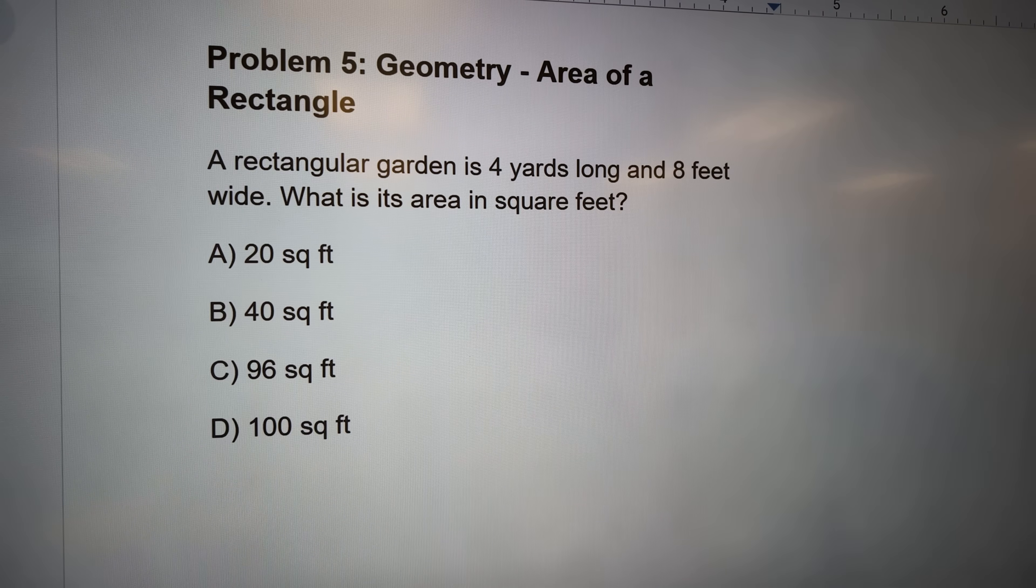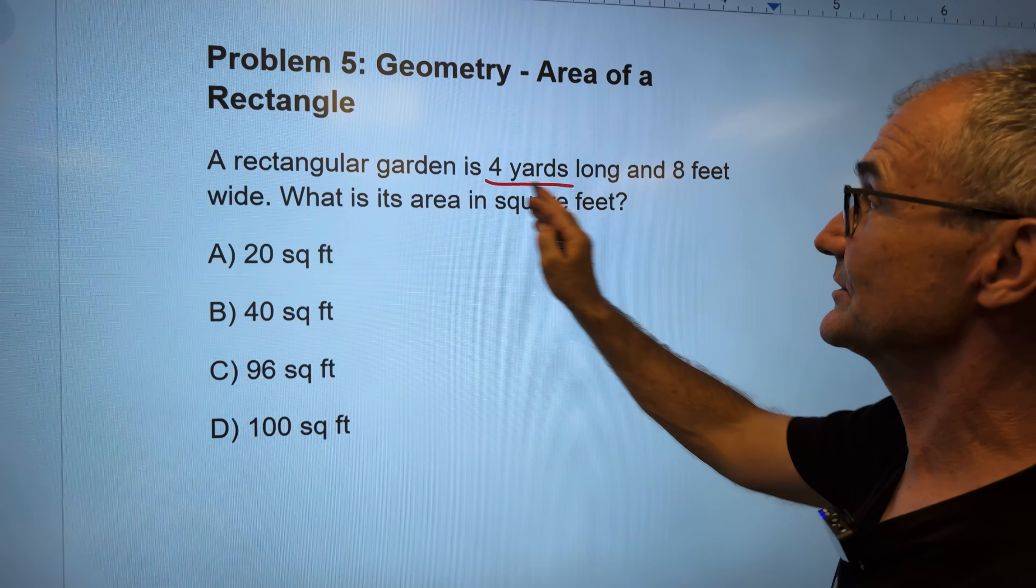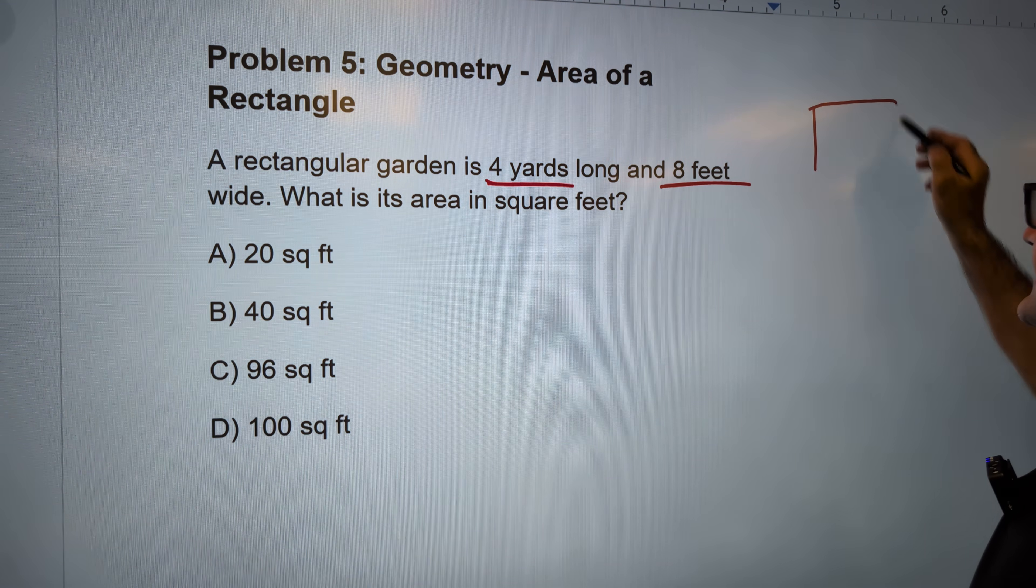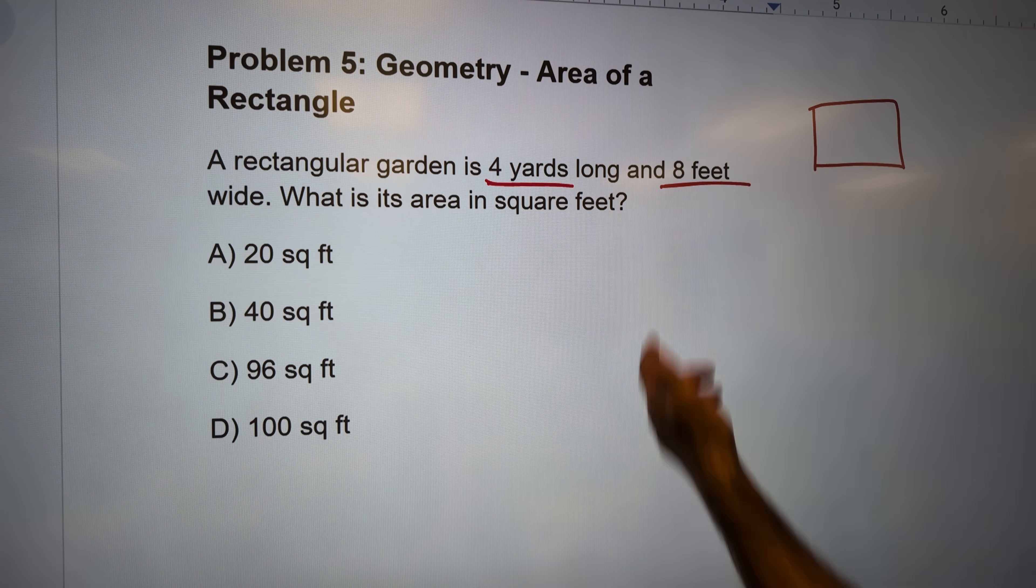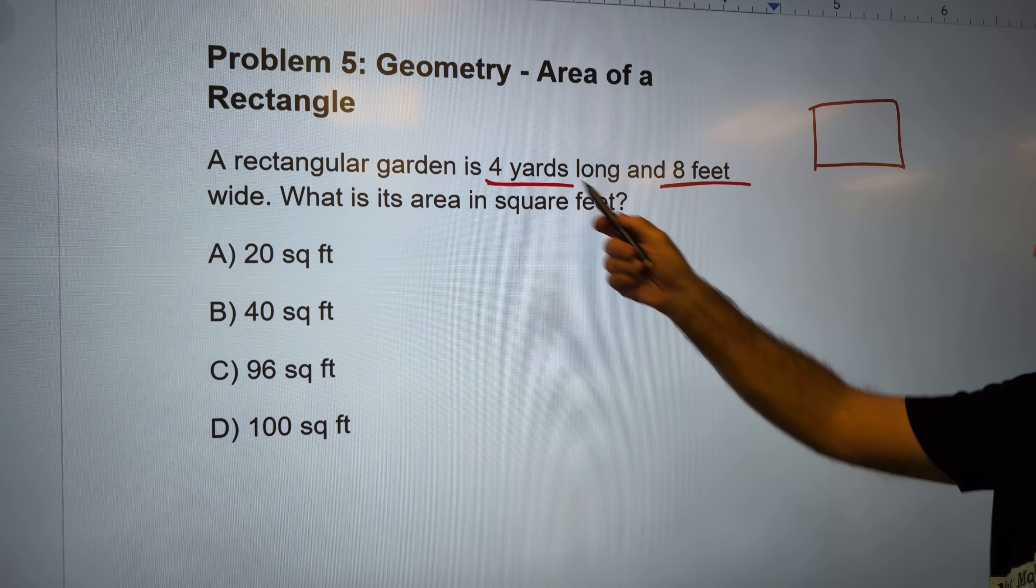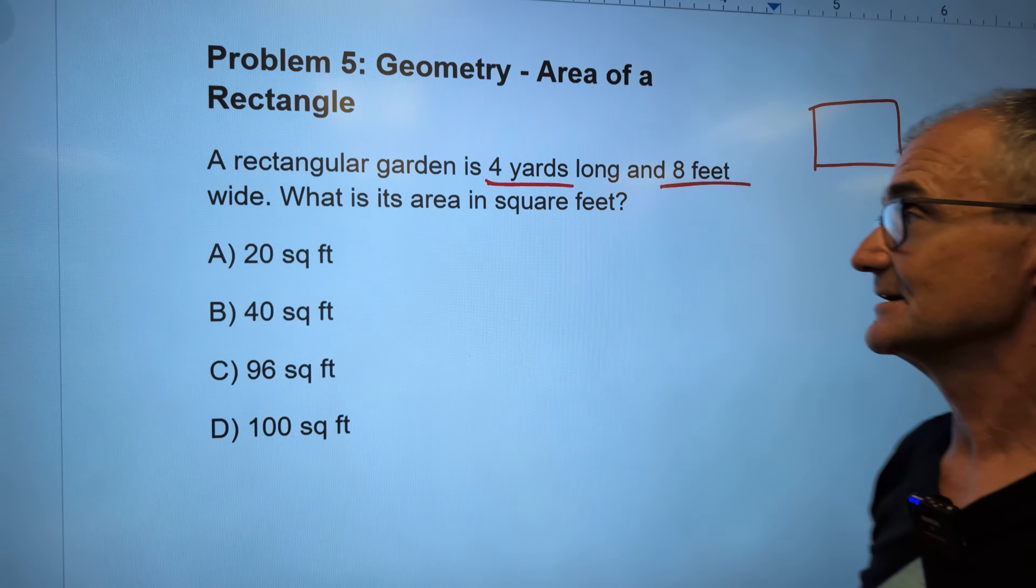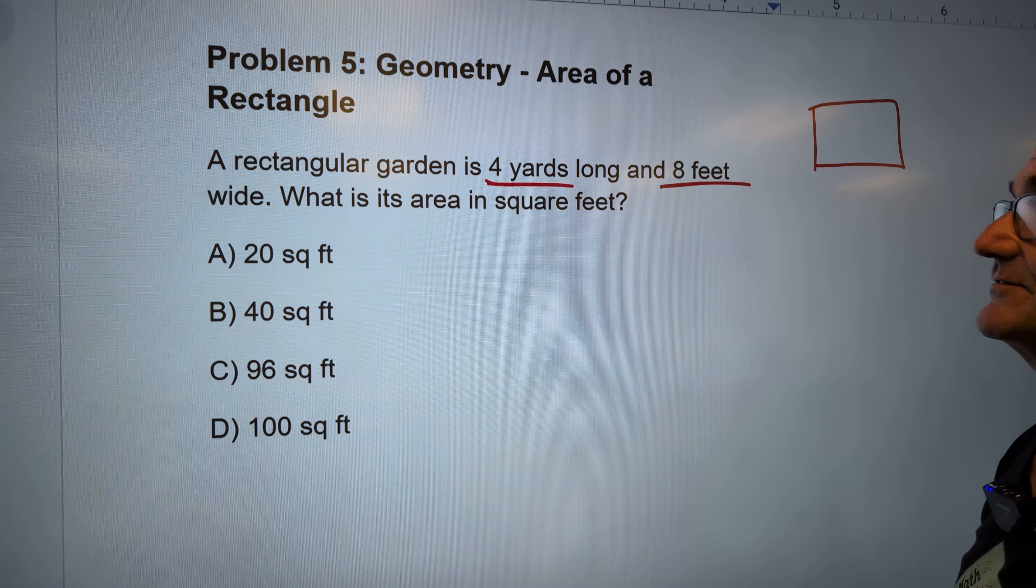Problem number five, area of a rectangle. I want to mark this up. Rectangle is 4 yards and 8 feet. So I got this yard that looks like that. I got different units. I have yards and feet. I look at my answers. Every answer is in feet. So that means I got to convert everything to feet.